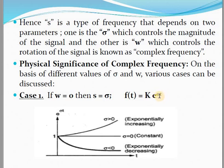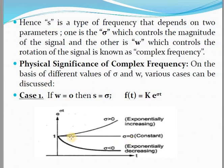In Case 1, when ω = 0, we have F(t) = k·e^(σt). Within this case, σ may be greater than zero, less than zero, or equal to zero. When σ > 0, it will be an exponentially increasing function. When σ = 0, e^0 = 1, so it will be a constant function. When σ < 0, e^(-αt) represents an exponentially decaying function.